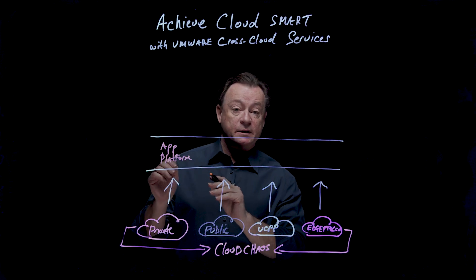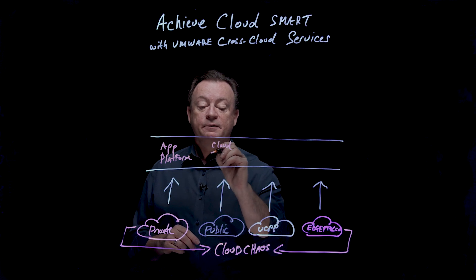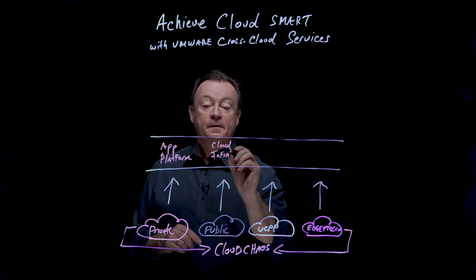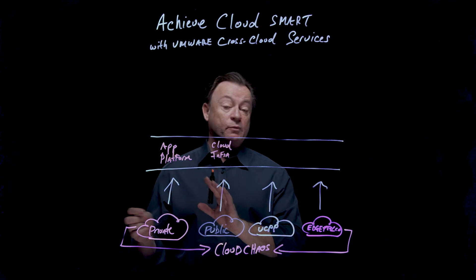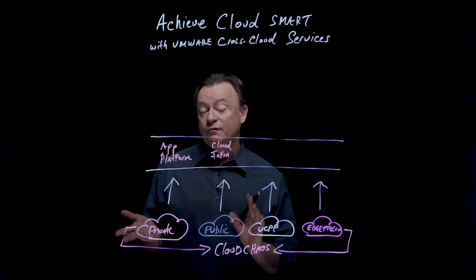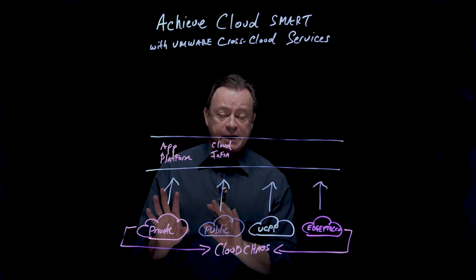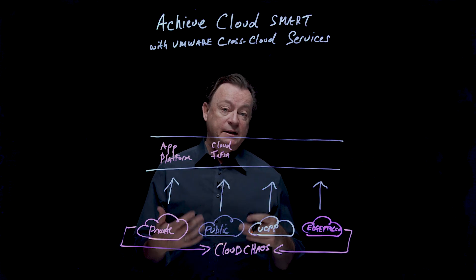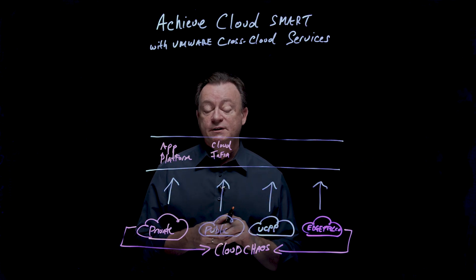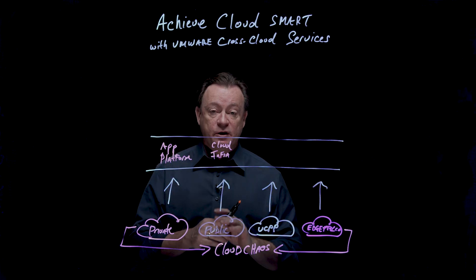The cross-cloud services include the application platform, represented by Tanzu. We also have cloud infrastructure — this is VMware Cloud on AWS, on Google, but it also includes VMware Cloud Foundation, hyperconverged infrastructure, and DR services. We can do DR from vSphere into the cloud. We even have a ransomware recovery offering to protect you from ransomware, and if there is a ransomware attack, we can fail you back successfully.